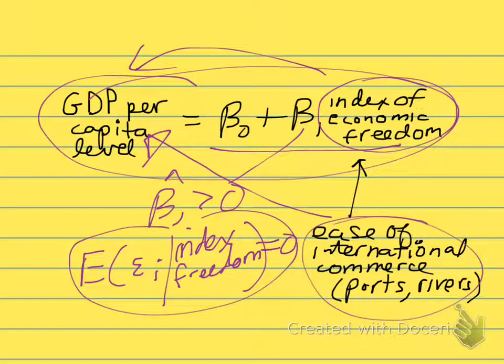This is why this assumption that the expected value of the error term, conditional on the x variable, is equal to zero is a really important assumption. We'll always want to be checking to see whether it makes sense. If it's violated, we'll have to do something. We'll have to correct our regression in ways we'll talk about in subsequent lectures.